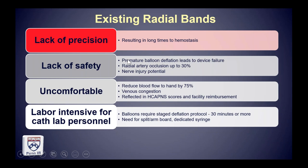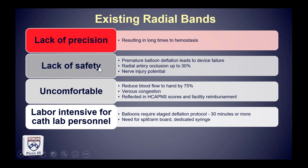These existing radial bands produced by multiple vendors have a lack of precision — compressing the entire wrist results in long time to achieve hemostasis. They can lead to premature deflation and failure of the device, and there's a real phenomenon of occluding the radial artery so that if you need to go back into it, the artery may no longer be open. There's potential for nerve injury. Flow measurements have shown blood flow to the hand is reduced by 75% and venous return is reduced causing venous congestion. Patient satisfaction scores show this device is the only thing patients remember after their procedure.